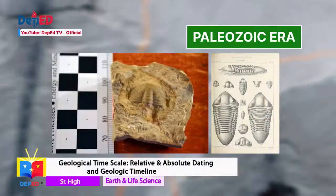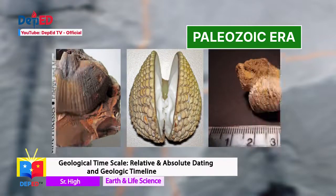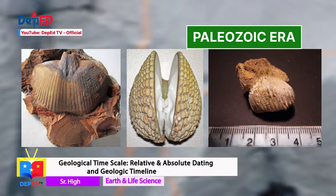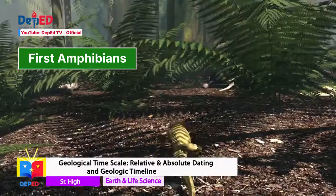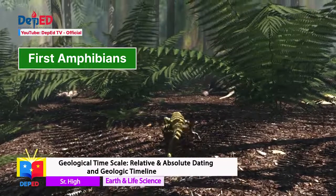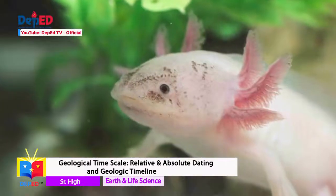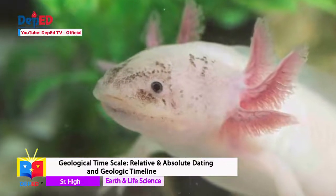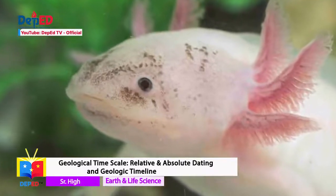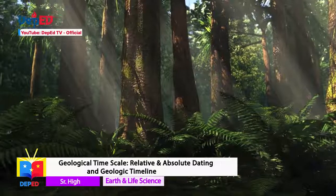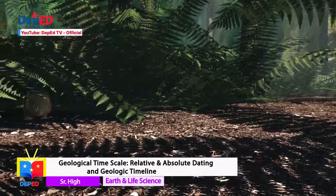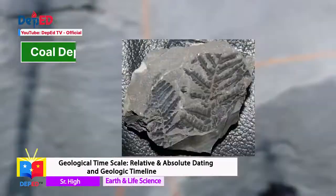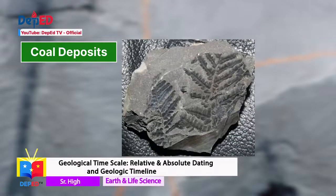Paleozoic Era. Fossils of trilobites and brachiopods were found preserved in layers of sedimentary rocks. The first animal to succeed in adapting itself to breathe air were the amphibians. Marine life also developed and became more abundant and with a greater variety of forms. Different types of plants and ferns grew during this era. It was believed that the remains of these plants formed the huge coal deposits in many parts of the world.